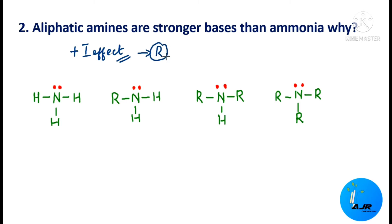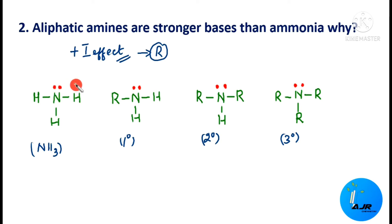In the case of ammonia, nitrogen is attached to three hydrogen atoms and there is no such effect. In primary amine, instead of one hydrogen atom we have one alkyl group, which has the plus I effect — it has the capacity to release electrons. Since this alkyl group is releasing electrons, the nitrogen will have more electrons, and the lone pair of electrons already present on the nitrogen can be easily donated. Because of this, aliphatic primary amine will be a stronger base when compared to ammonia.